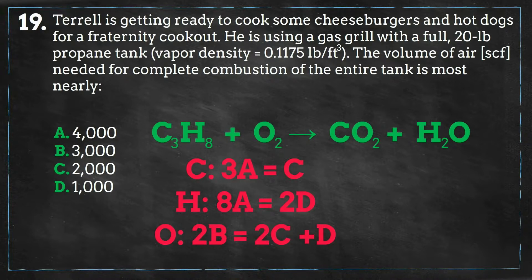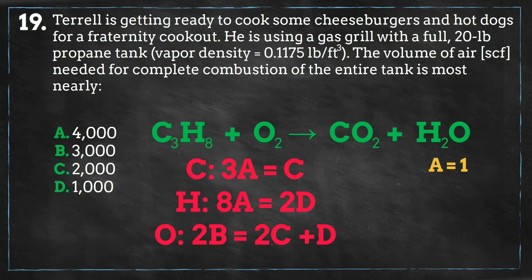I have created my equations for each of my constituents. We will take the simplest equation, which is the one for carbon, and set one of the variables to 1 — I decided to make A equal to 1. Therefore, C is equal to 3, D is equal to 4, and B is equal to 5.